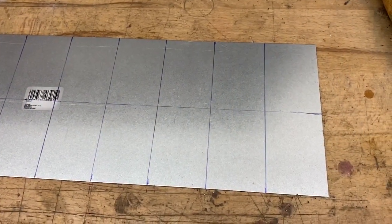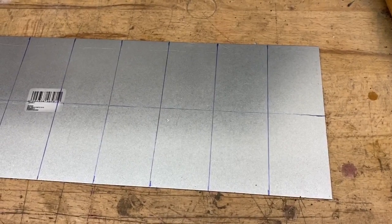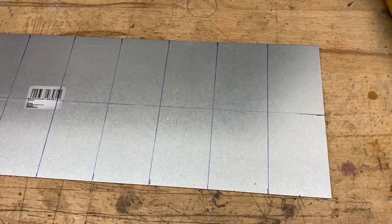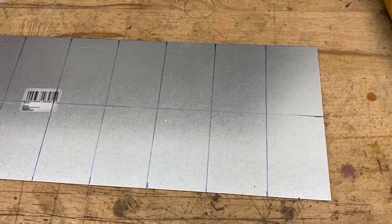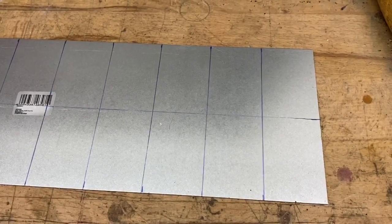Teilt nun die 12 Zentimeter und zeichnet dann alle 4 Zentimeter eure Markierungen an. So erhaltet ihr jeweils immer ein Blech von einer Größe von 4 x 6 Zentimeter.